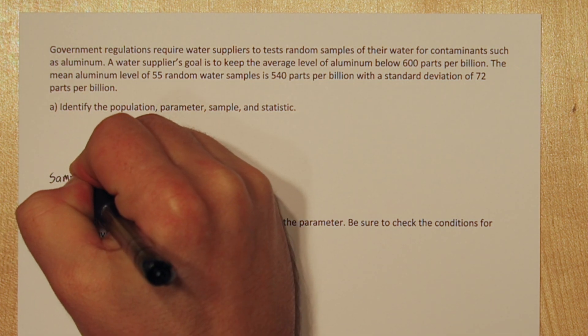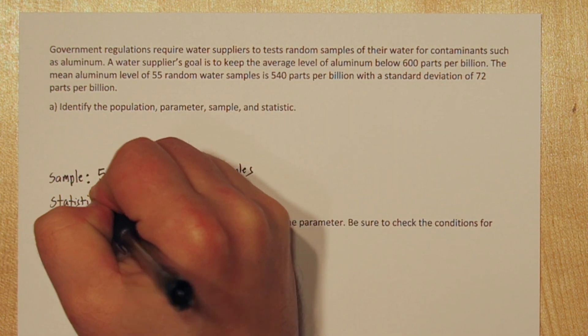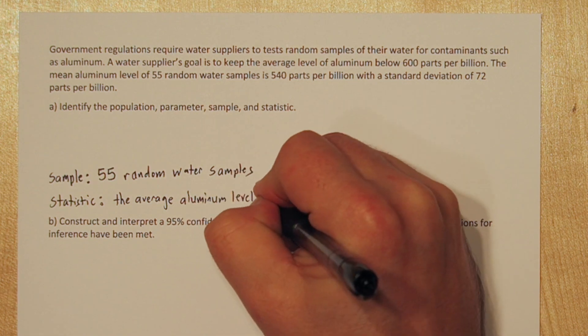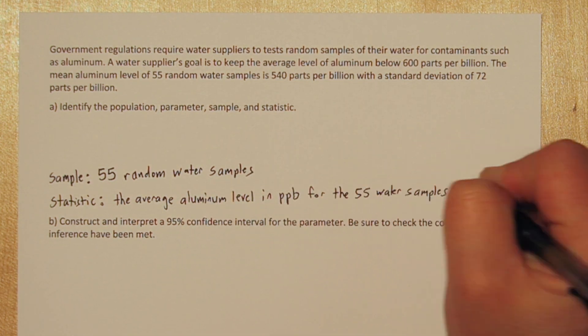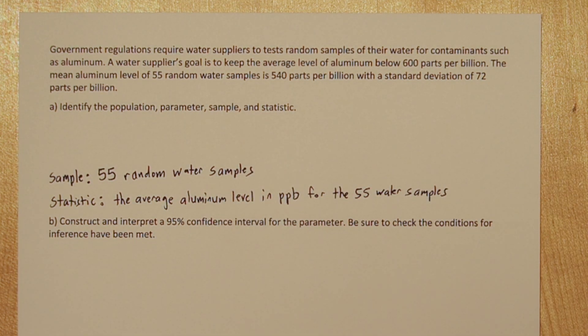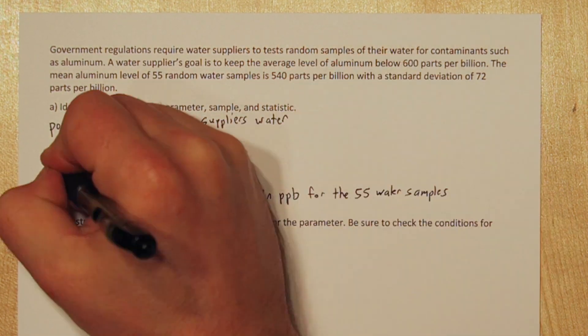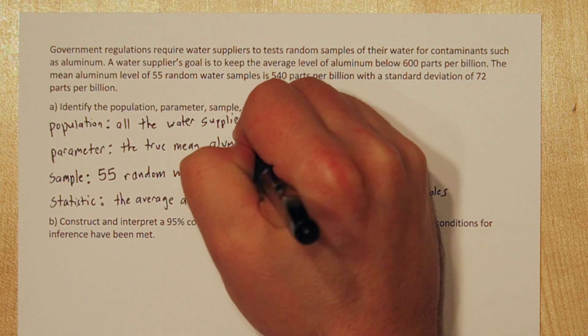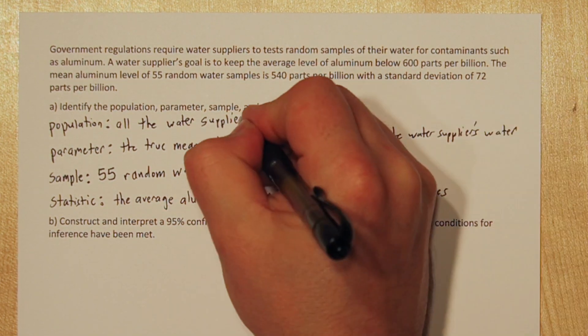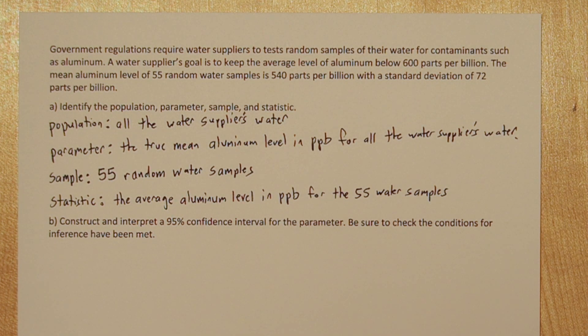So the sample is obviously the 55 random water samples, and the statistic is going to be the average aluminum level in parts per billion for those 55 water samples. So let's jump back and think of the bigger population. The population is all the water supplier's water from which those samples came from, and the parameter is going to be the true mean aluminum level in parts per billion for all the water supplier's water.